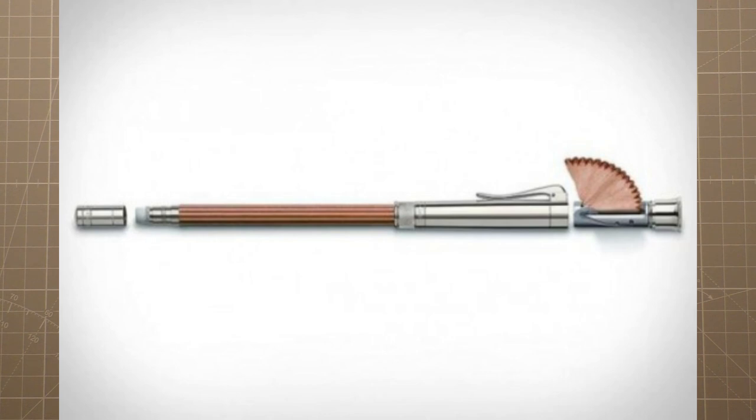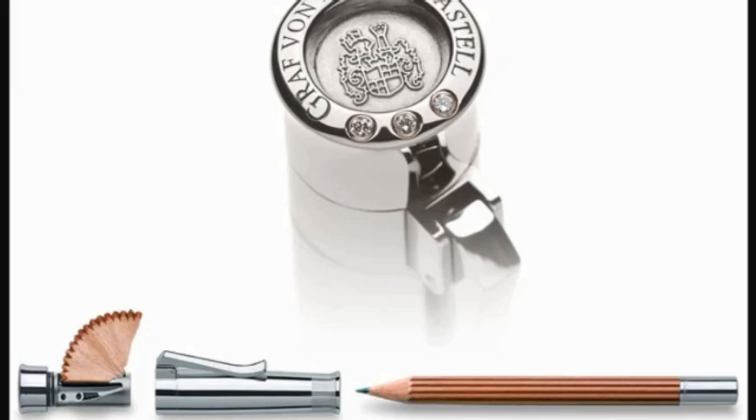Okay so this is the pencil here. It's made by Graf von Faber-Castell and the pencil is crafted from 240 year old olive wood and the metal parts are 18 carat white gold. And as you can see there in this picture the end cap is inlaid with three high quality diamonds just underneath the Faber-Castell coat of arms there.